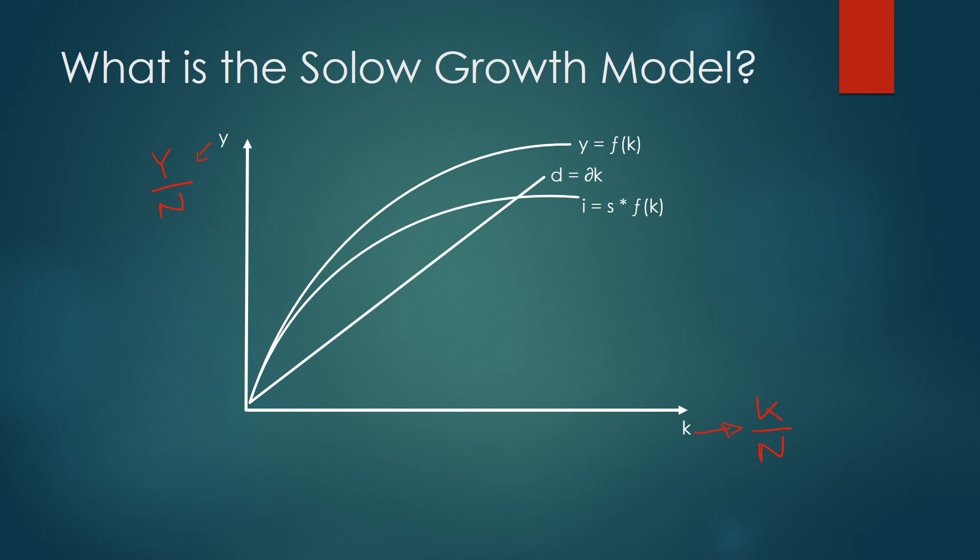We're going to start with the depreciation curve, which is the straight line that goes up. Essentially all this curve shows is that as we increase capital we get an increase in depreciation. Depreciation is proportional to the amount of capital in the economy, and this makes intuitive sense — as you increase the amount of capital, how often your machines go faulty is likely to increase. So depreciation is upward sloping relative to the amount of capital.